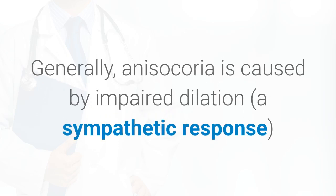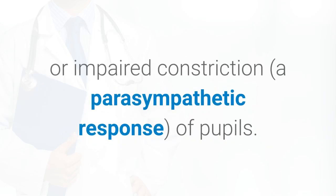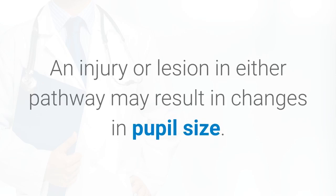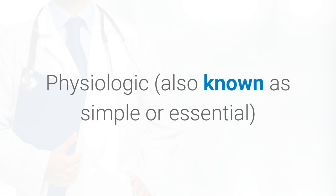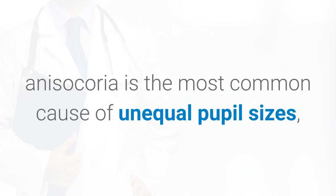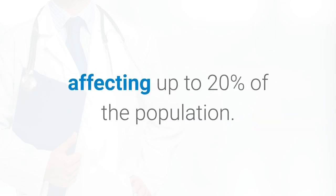Generally, anisocoria is caused by impaired dilation or impaired constriction of pupils. An injury or lesion in either pathway may result in changes in pupil size. Physiologic — also known as simple or essential — anisocoria is the most common cause of unequal pupil sizes, affecting up to 20% of the population.